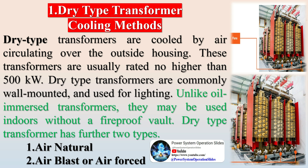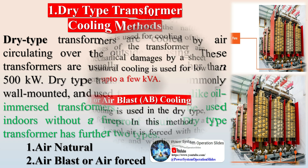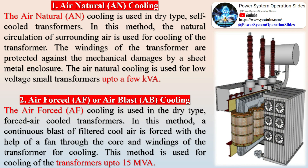Air Forced (AF) or Air Blast (AB) cooling is used in dry type, forced air cooled transformers. In this method, a continuous blast of filtered cool air is forced with the help of a fan through the core and windings of the transformer for cooling. This method is used for cooling transformers up to 15 MVA.